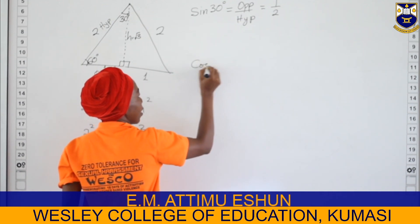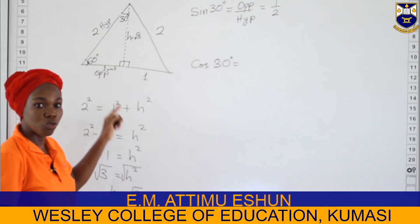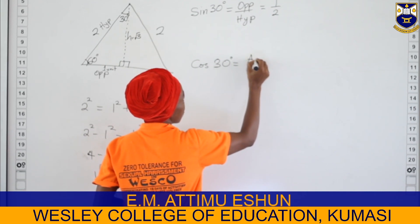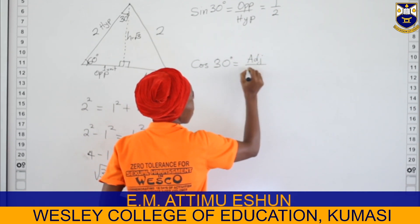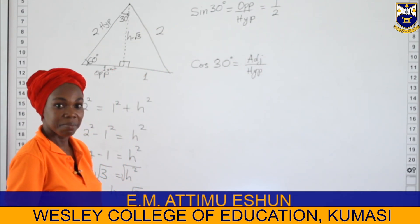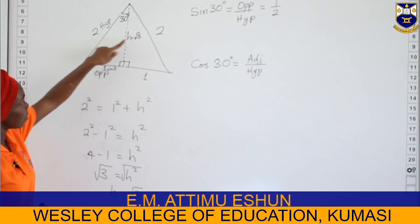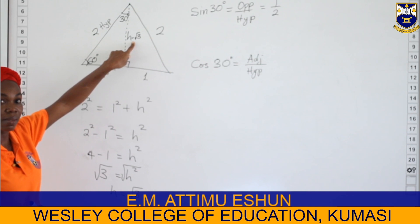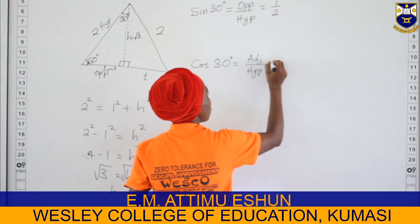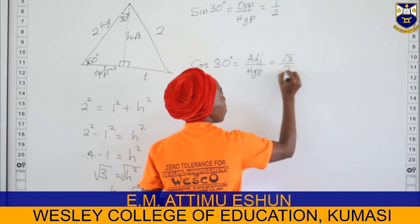We can find cos 30 degrees. The ratio for cosine is adjacent divided by hypotenuse. From our diagram, the adjacent side is root three and the hypotenuse is two, so cos 30 equals root three divided by two.